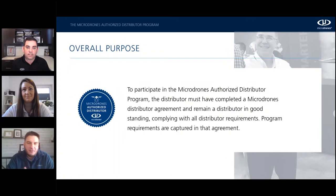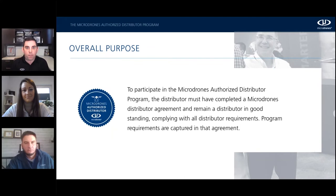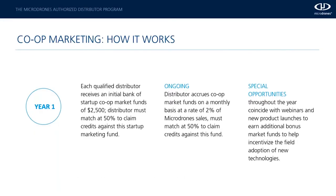To participate in this program, you have to be a distributor in good standing. That means the moment that you have signed your Microdrones Distributor Agreement, you are eligible to take advantage of the Microdrones Authorized Distributor Program. Can you tell us a little bit on this next slide, overall, how the program works?